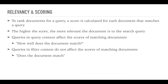Queries within the query context answer the question: how well does the document match, assuming that it does match. Queries applied in the filter context, on the other hand, answer the question: does the document match. If a document does not match a filter, then it is disregarded and will not be part of the results. It is important to note that filters do not affect the scores of matching documents, but rather filter out documents that don't satisfy the requirements of the filters.